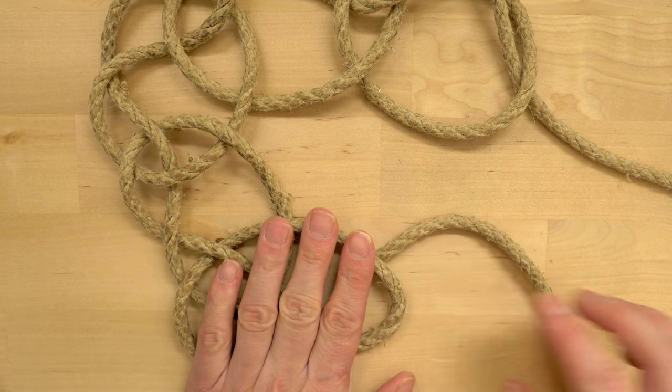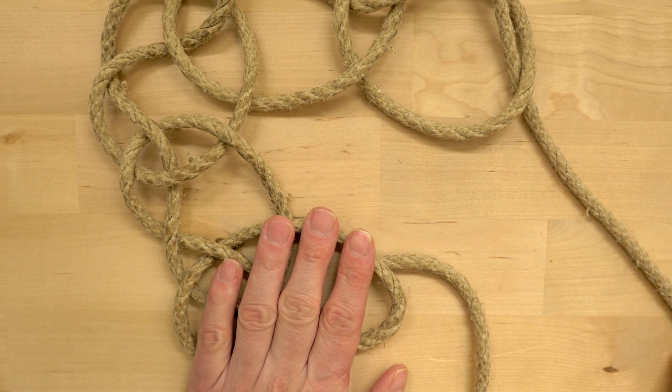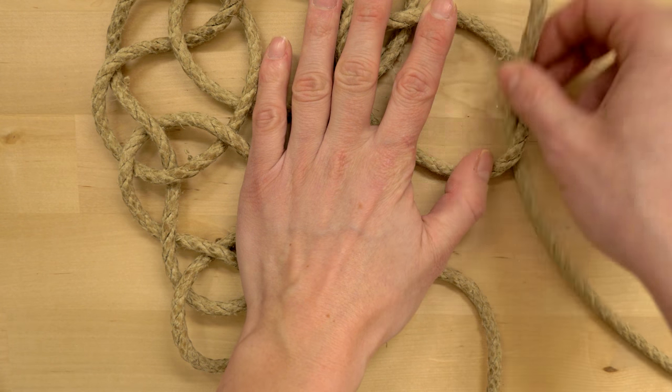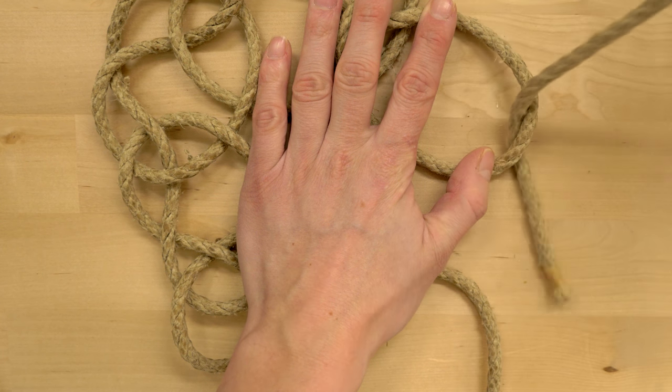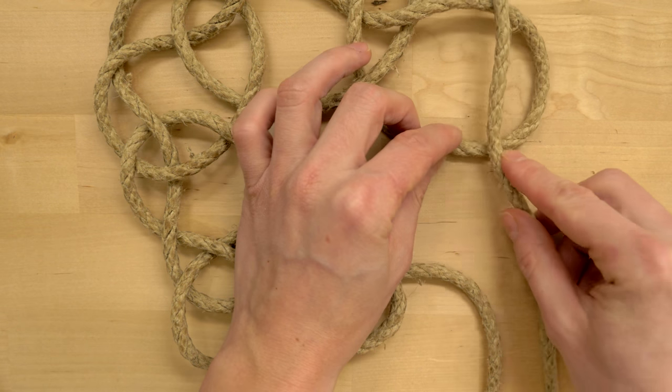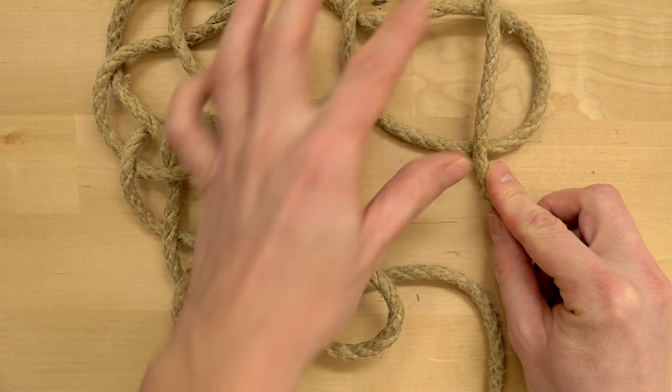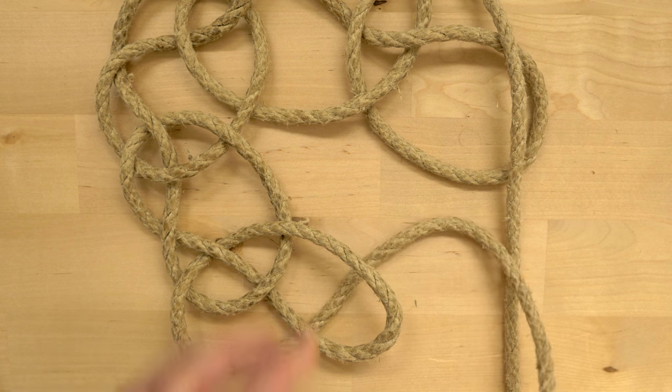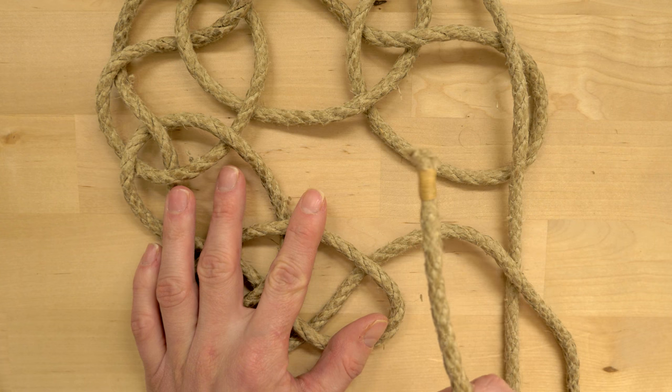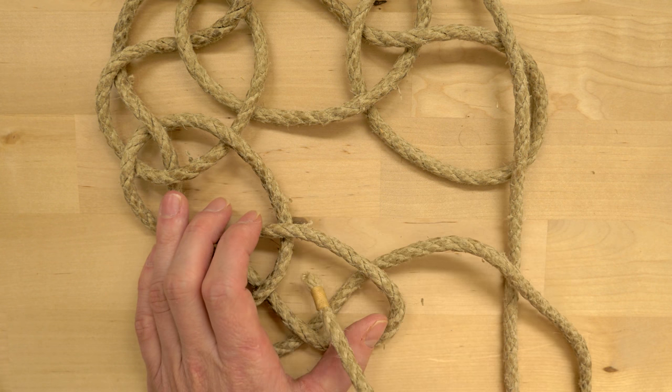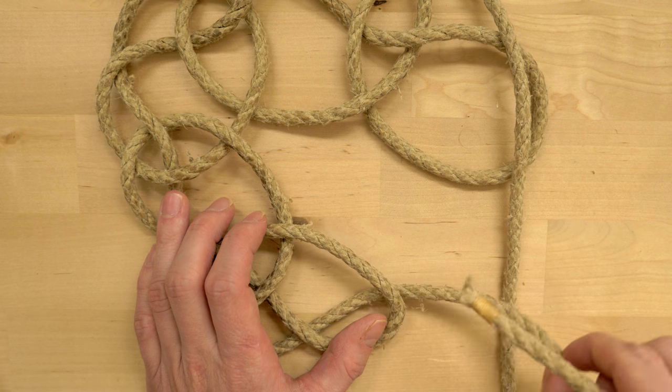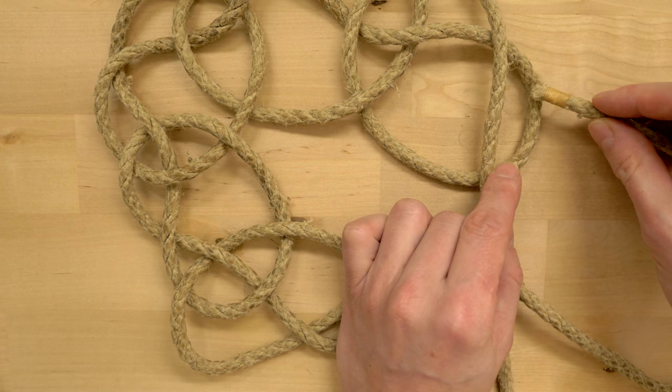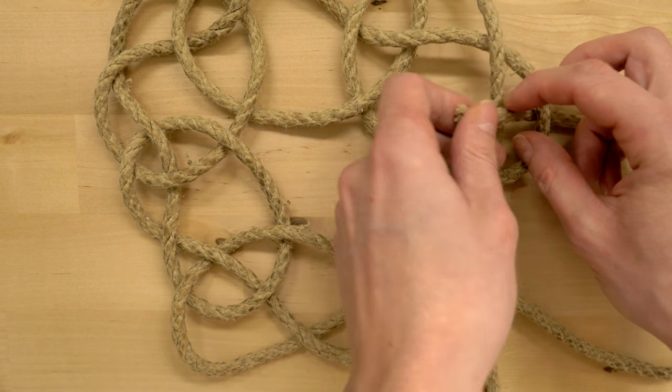So under two, going over the other end. Then split this loop by going under, over, under.